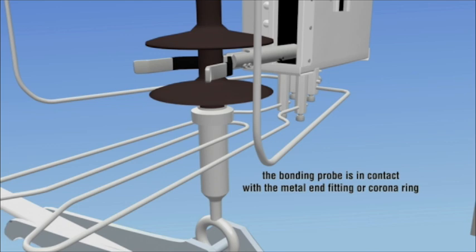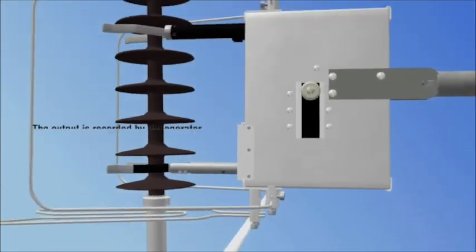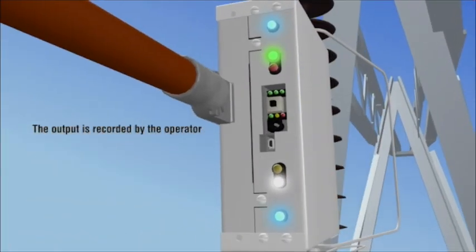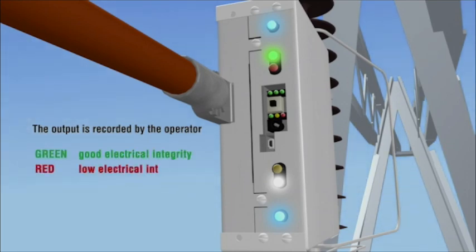If full contact is not made, arcing may occur which can influence the measurement results. The output from the instrument is recorded by the operator as green or red indicating whether the section tested is considered to have electrical integrity or not. If the amber LED is continuously lit and a faster, higher frequency tone occurs, the measurement was not complete and needs to be repeated.